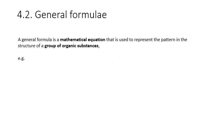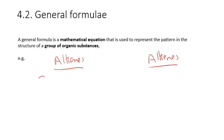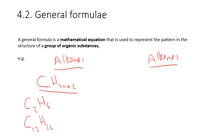General formulae are something people get a bit confused about. They are mathematical equations used to represent the pattern in the structure of a group of organic substances. There are only two you need to know for this course — alkanes and alkenes. The general formula of alkanes is CnH2n+2. This means that for any number of carbons, you can figure out how many hydrogens you have. For example, a two-carbon chain gives 2×2+2 = 6 hydrogens, C2H6. For a 12-carbon chain, multiply 12 by two to get 24, add two, giving 26 hydrogens.